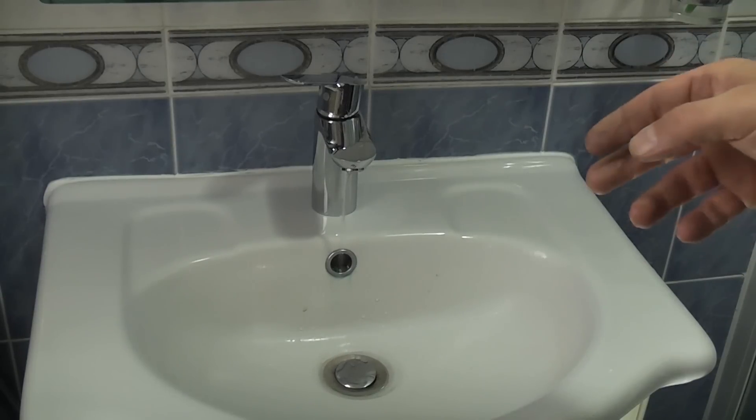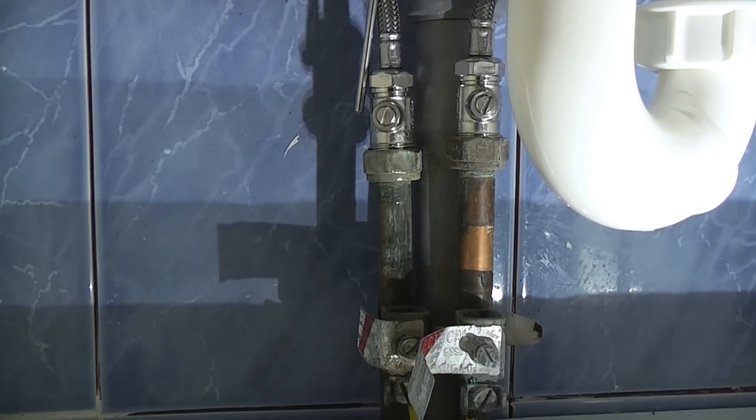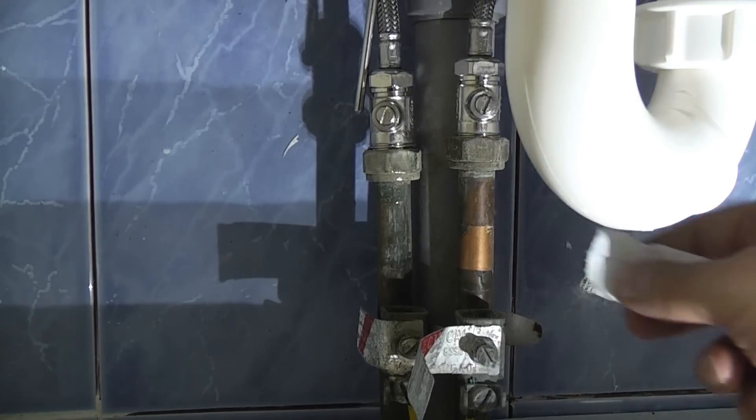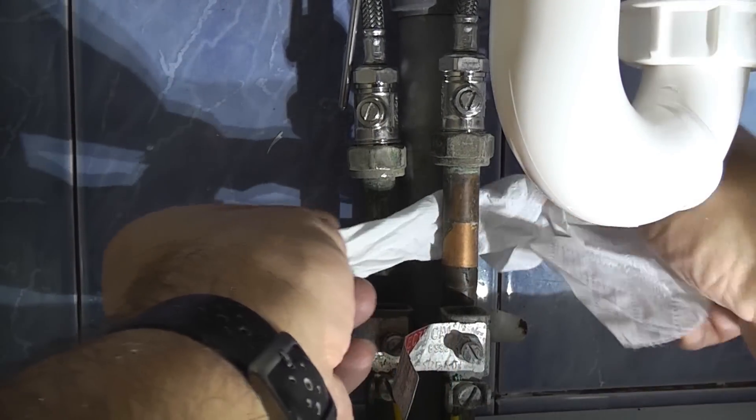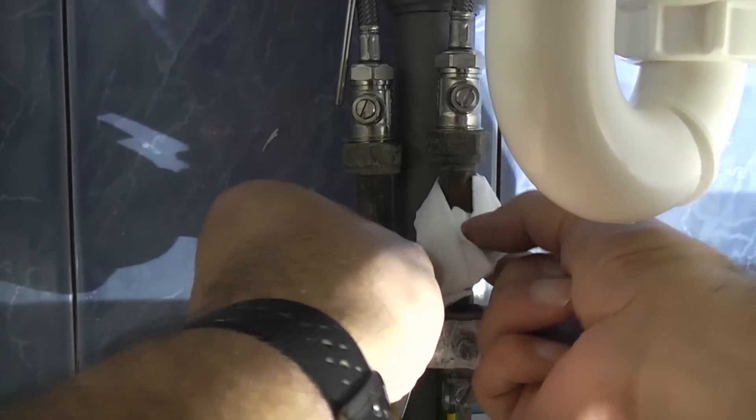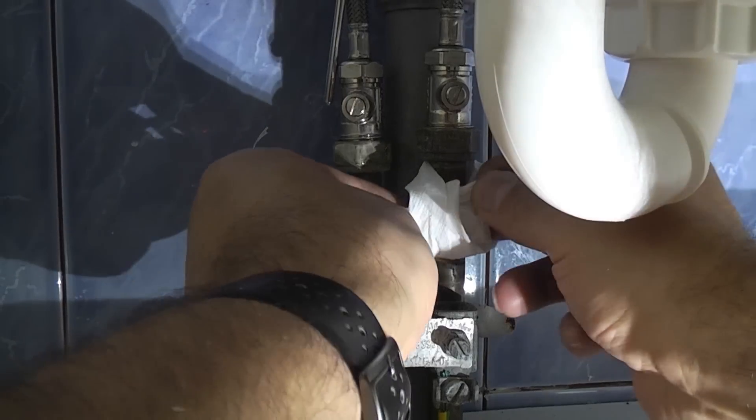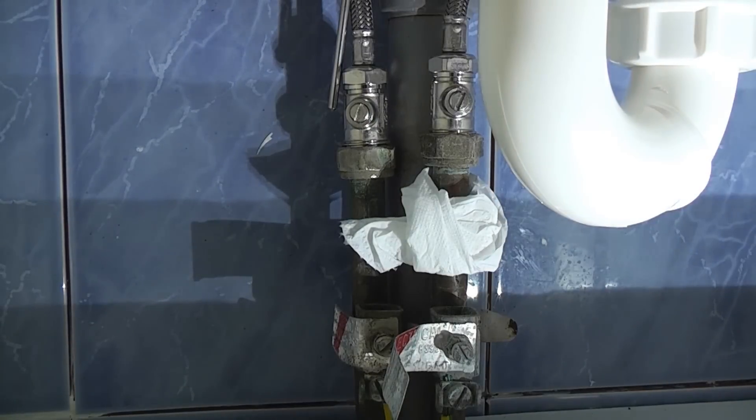I will put some links in the description to other taps that I've changed as they may be useful for you. You now just need to keep an eye on this and make sure it's not leaking. If you want to check, a good way is to get a piece of tissue and just wrap that around each pipe. And if there's any leak on there at all, any water gets on that, it'll immediately saturate the tissue and you'll know that you've got a leak.